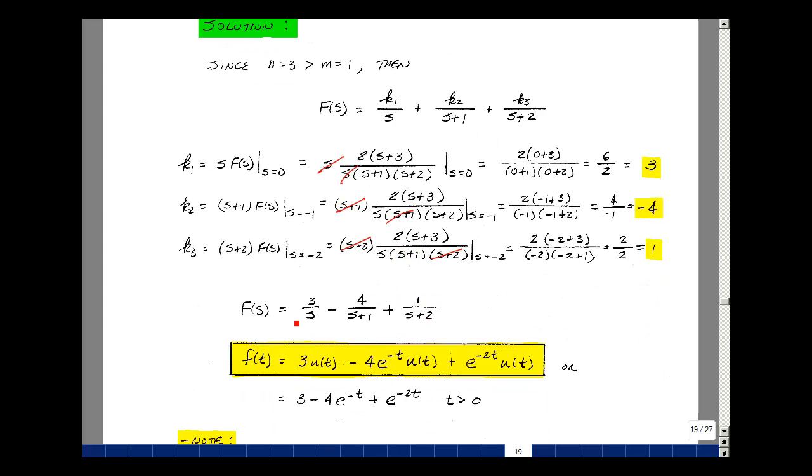We can now write f(s) as 3/s - 4/(s+1) + 1/(s+2). Now we can look at our table on page 13 and do the inverse transform. This corresponds to a step function multiplied by 3, a decaying exponential e^(-t) multiplied by -4, and e^(-2t) multiplied by 1.